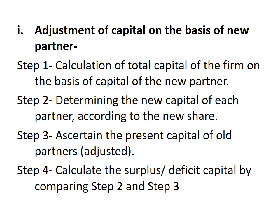Step number one: calculation of total capital of the firm on the basis of capital of the new partner. Step two: determining the new capital of each partner according to the new share. Step three: determining the present capital of all partners — here, the adjusted capital we have to ascertain. Step four: calculating the surplus and deficit by comparing step one and step two.